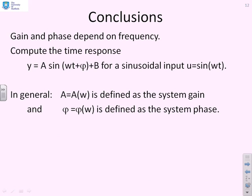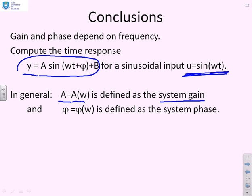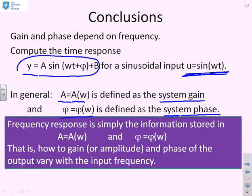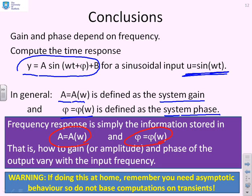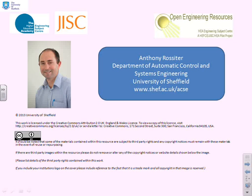In conclusion: gain and phase depend on frequency. If we put a sinusoidal input into a linear system we expect an output y = A·sin(ωt + φ) + b. In general, A is a function of ω and is defined as the system gain; φ is also a function of ω and is defined as the system phase. Frequency response is simply the information stored in A(ω) and φ(ω) — how the gain and phase of the output vary as the input frequency changes. A warning: remember you need to look at asymptotic behaviour, not the transients, because during transients the output is not yet a proper sinusoid.